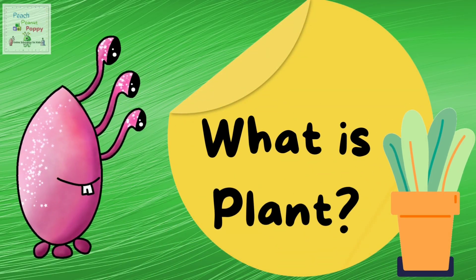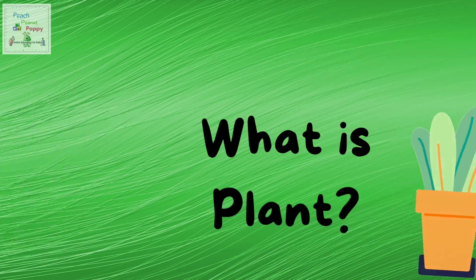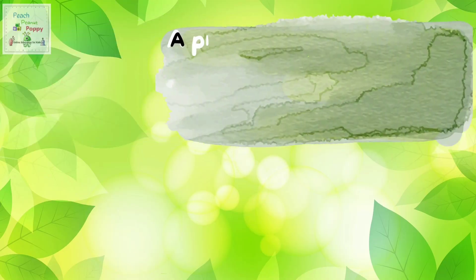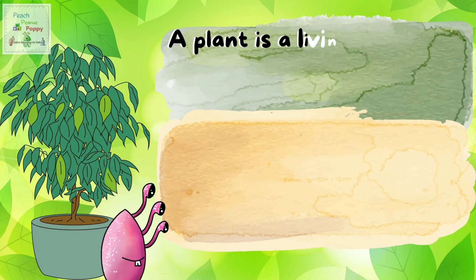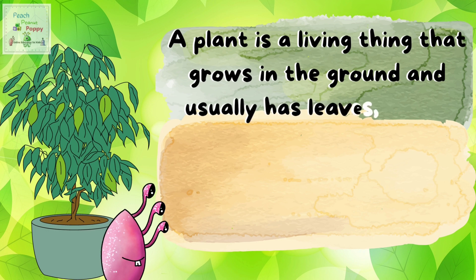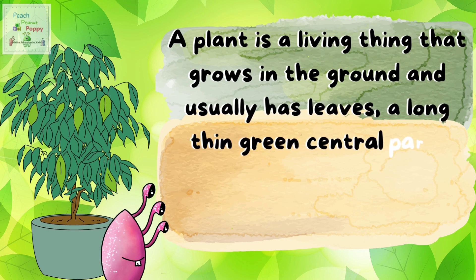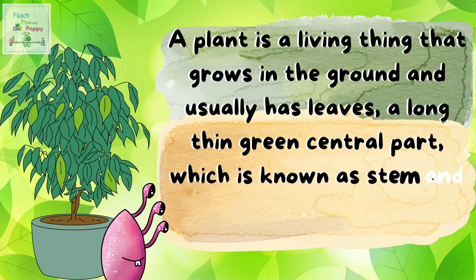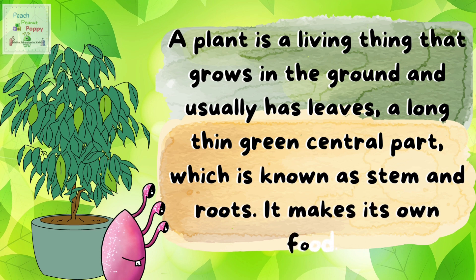So what is a plant? A plant is a living thing that grows in the ground and usually has leaves, a long thin green central part which is known as a stem, and roots. It makes its own food.